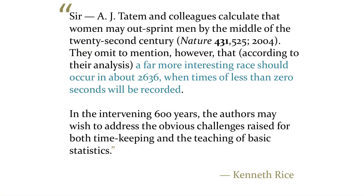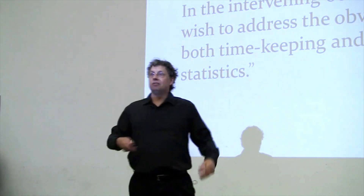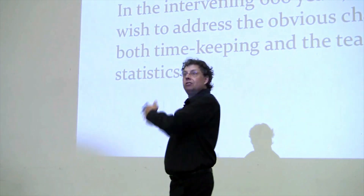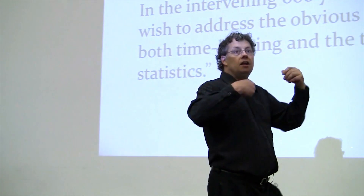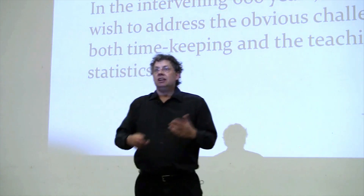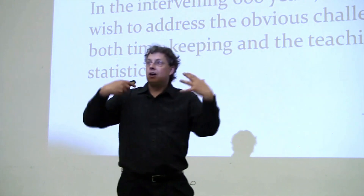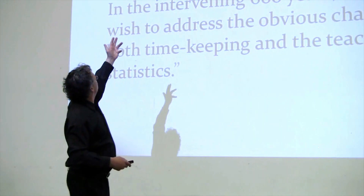Here it is — I'm going to read it: 'Sir, Tatum and colleagues calculate that women may out-sprint men by the middle of the 22nd century. They omit to mention, however, that, according to their analysis, a far more interesting race should occur in about 2636, when times of less than zero seconds will be recorded.' It's not necessarily ridiculous that women will be out-sprinting men at some point. But it's obviously ridiculous that there will be negative times recorded in the Olympic 100 meter dash. What this points out is that the model — taking a linear regression through these points and extrapolating it out over 100 years — when you know that a linear model can't be correct arbitrarily long because it'll take you down below zero, is ridiculous. And that undermines the entire initial claim in, what is that, two sentences.